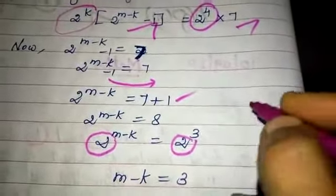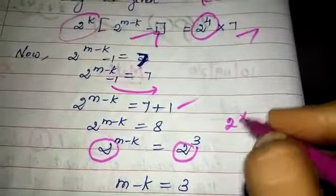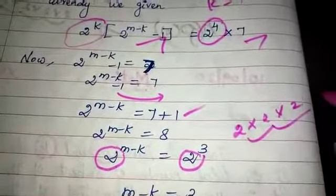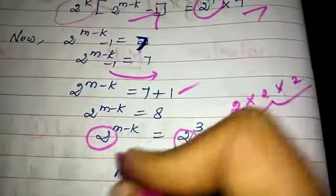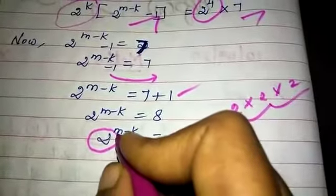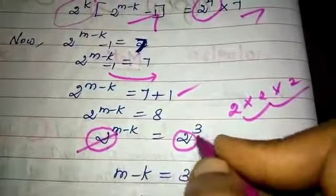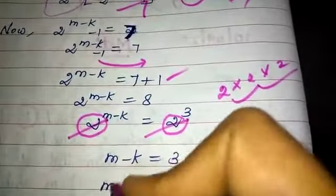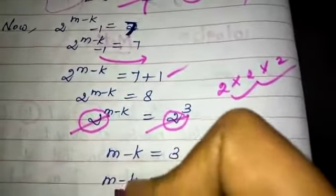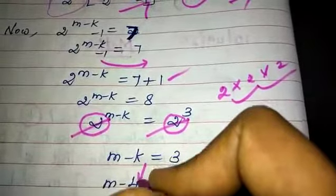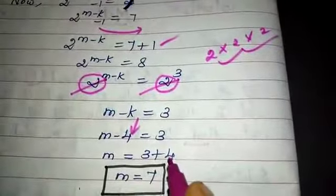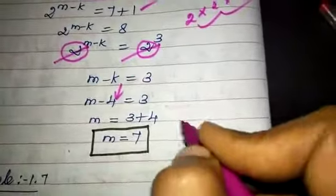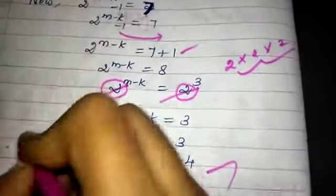Comparing: 2^K equals 2^4, so K equals 4. And 2^(M-K) minus 1 equals 7, giving M minus K equals 3.